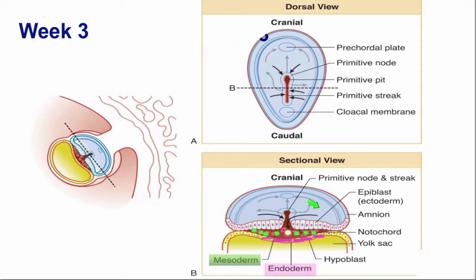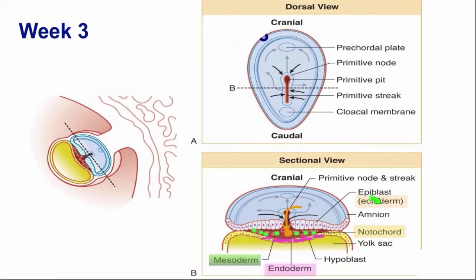There are other cells from the epiblast that migrate to the primitive streak, enter that middle layer, and do stay in the midline — those cells will be called the notochord cells. So we end up with a middle layer made up of notochord in the midline and mesoderm on the right and left sides. Both notochord and mesoderm come from the epiblast, just like endoderm. Finally, other epiblast cells stay in the upper layer — they do not migrate through the primitive streak — and we call them ectoderm cells.